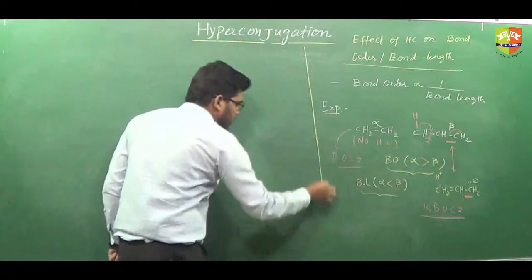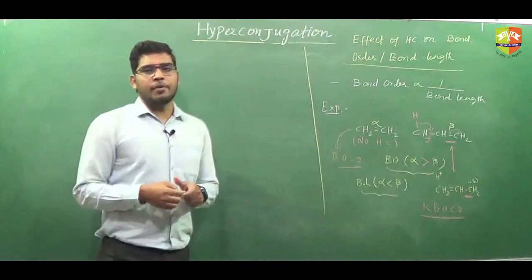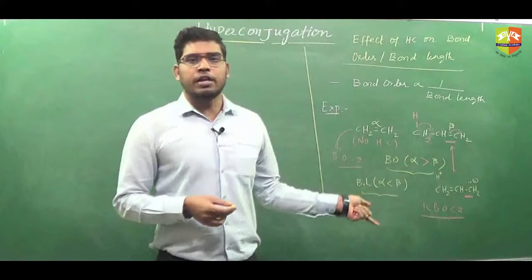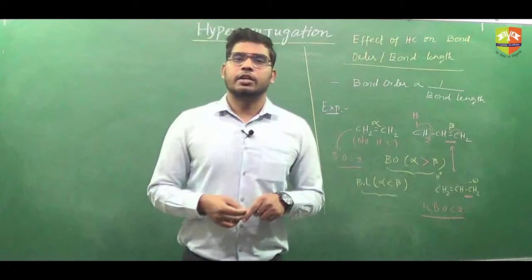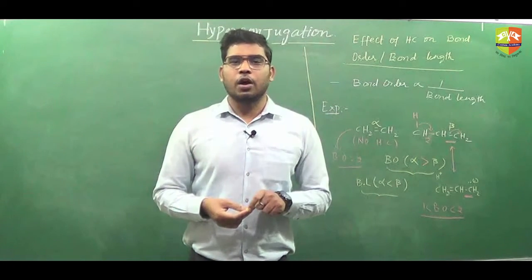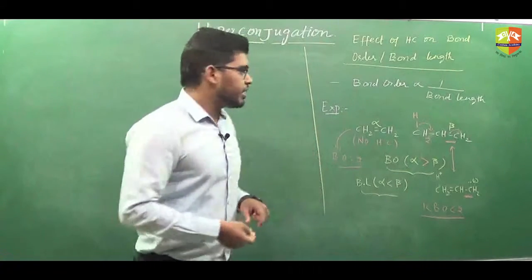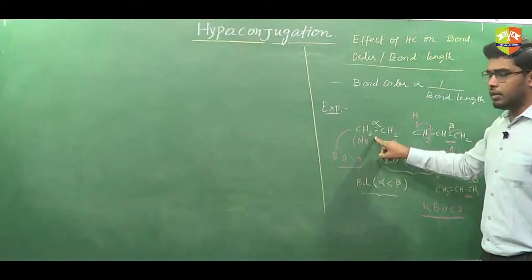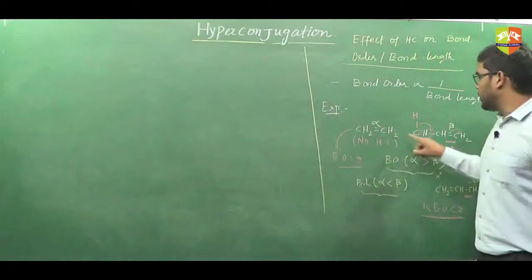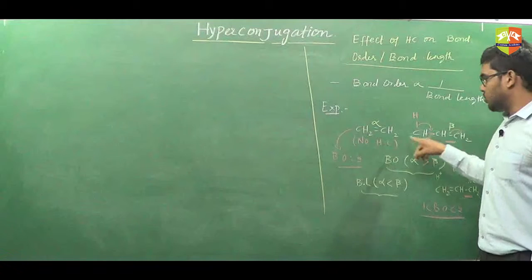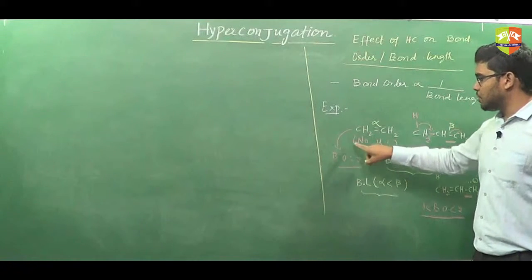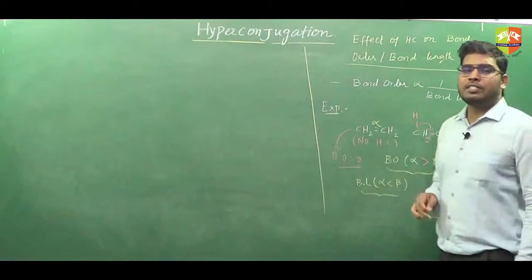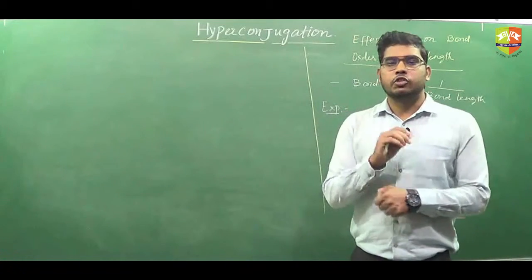One thing we can conclude here is that if more number of hyperconjugating structures exist in which the double bond is converting into single bond, then the bond order will be less. For example, in one molecule there is no hyperconjugation, here we have hyperconjugation. Since there is no hyperconjugation, bond order is 2, and here it will be between 1 and 2. But what happens if two molecules both show hyperconjugation?